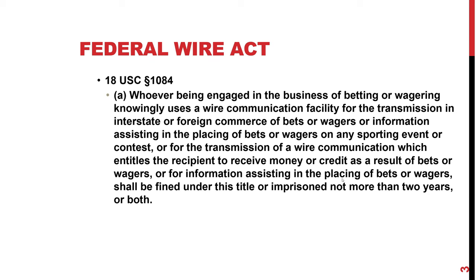This is the prohibition section of the Federal Wire Act, at 18 U.S.C. 1084. Whoever being in the business of betting or wagering — so this is a supply-side law only. With most federal laws, they don't go after the bettor; they go after anybody involved in offering wagering. The Act prohibits knowingly using a wire communication facility for the transmission in interstate or foreign commerce of bets or information assisting in the placement of bets or wagers on any sporting event or contest.